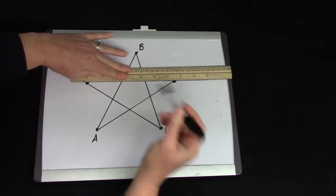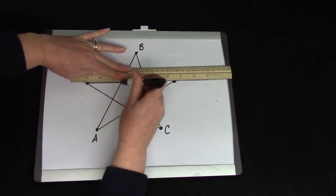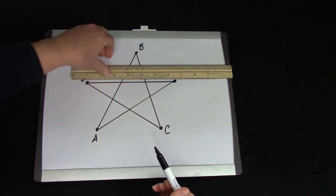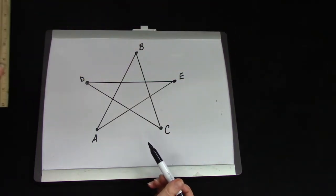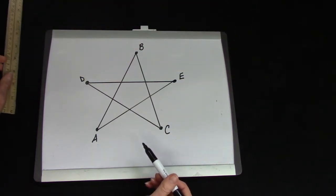I'm going to line up my ruler. Hold it tightly so that it doesn't move and draw my line. What shape did I just draw? It is a star.